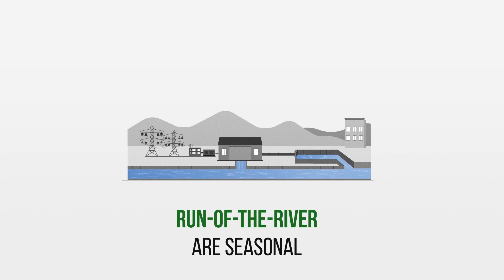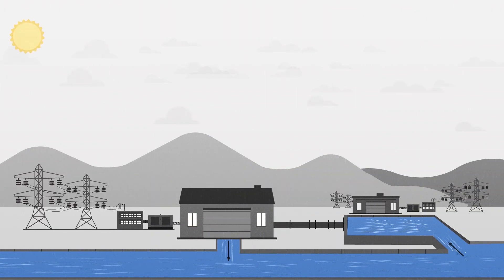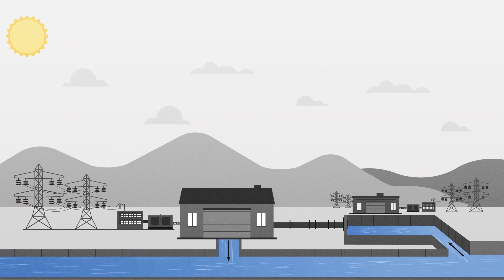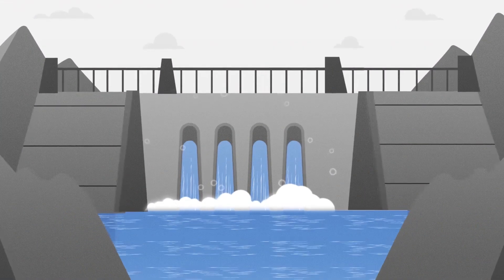The downside of the run-of-the-river dams is that they are seasonal. They produce more when there is significant rainfall or meltwater and produce less when there isn't. They cannot act like a giant battery in the same way as large impoundment dams.